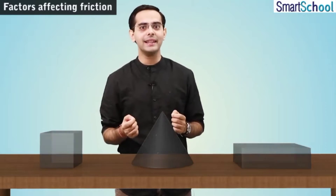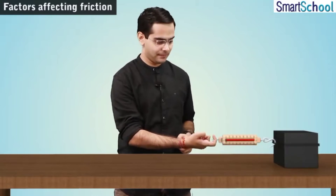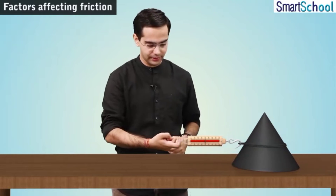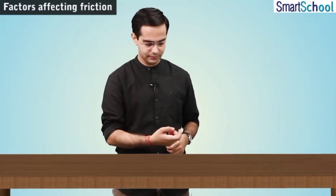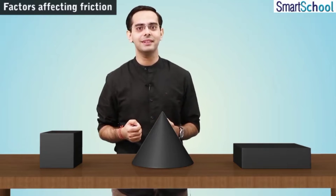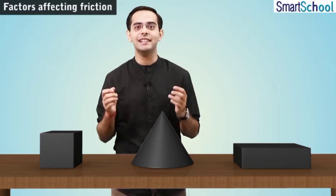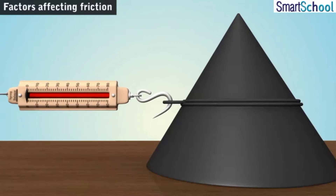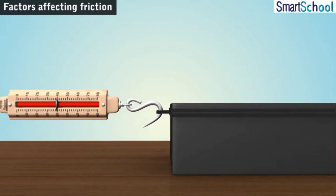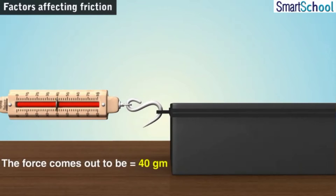Now I drag them one by one using the spring balance such that they just begin to slide. What do I find when I am dragging each one of them? I find that in each case, the force required to drag these blocks comes out to be almost the same. As you can see here, the spring balance shows a reading of 40 grams, which is equivalent to approximately 0.4 Newton.